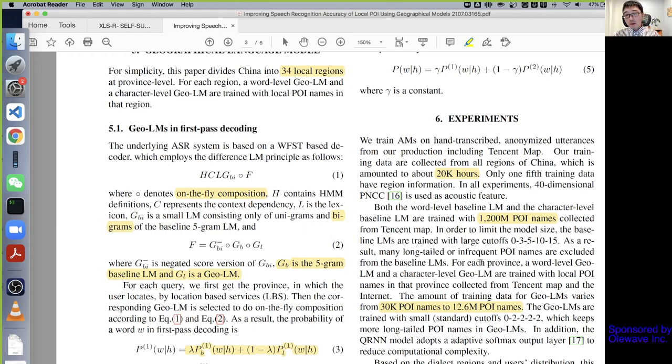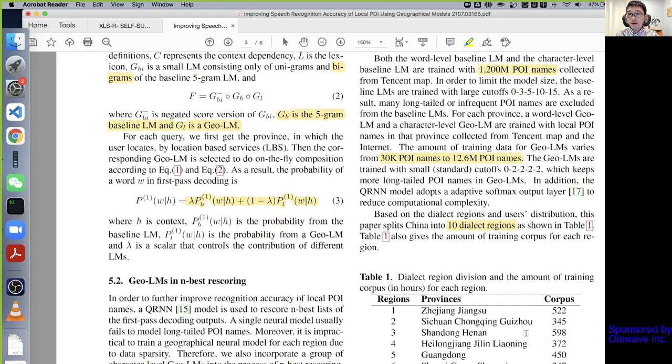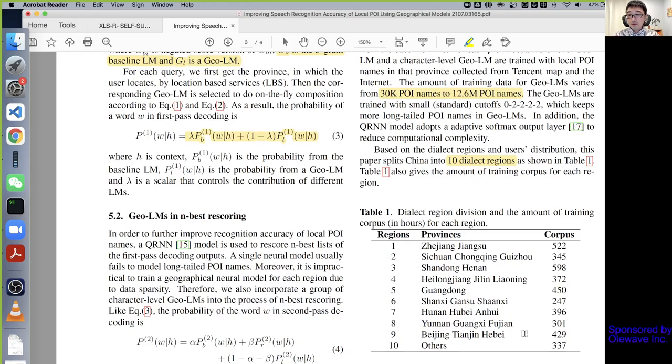For their experiment, I would say their model size is relatively large for a production model. They have 20k hours of data from different regions and they have lots of POI names - 1.2 trillion POI names, lots of names. Although there are 34 provinces in China, the authors did cluster or split China into 10 different dialect regions.